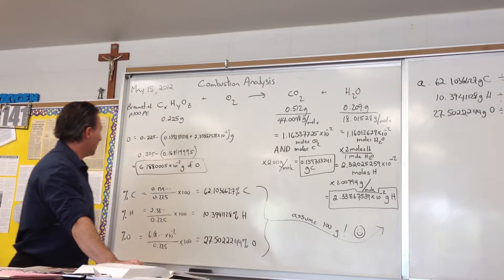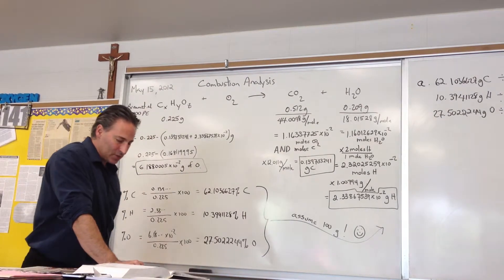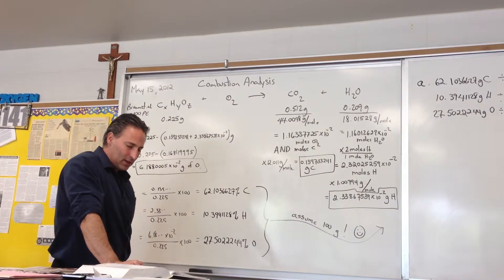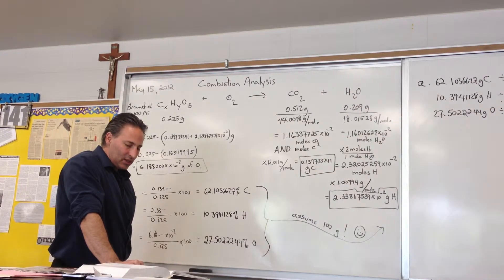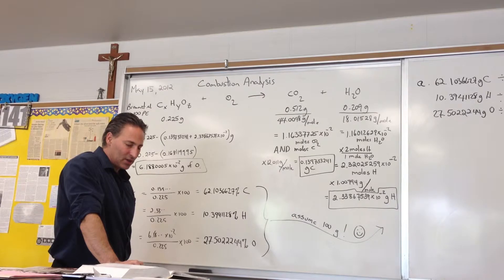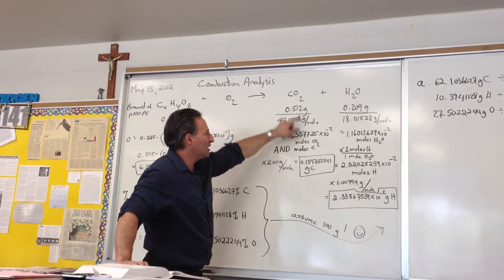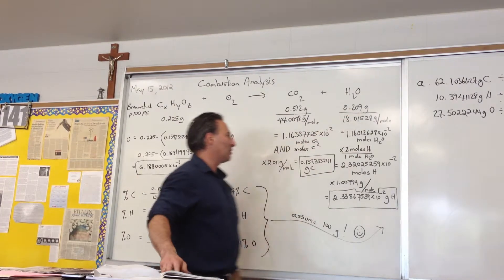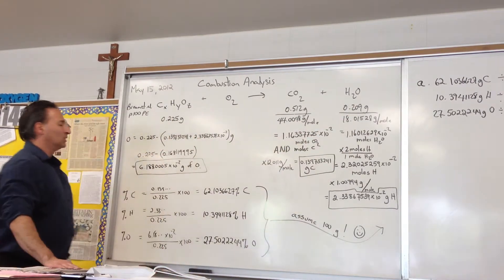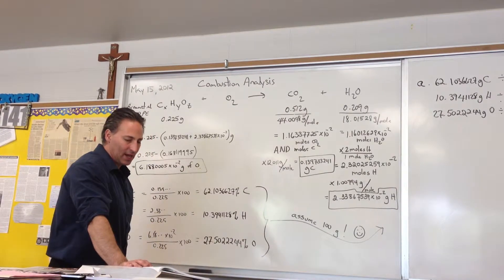We're doing a question from page 100 of our textbook. The question is: caproic acid is composed of C, H, and O. Combustion of 0.225 grams of this compound produces 0.512 grams of carbon dioxide and 0.209 grams of water. What is the empirical formula of caproic acid?